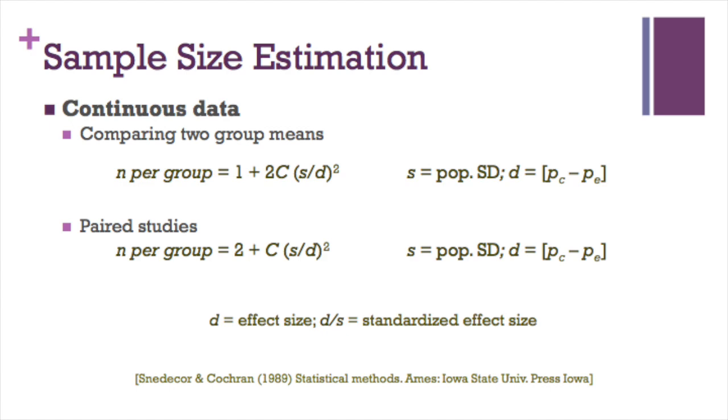For continuous data to compare two group means, either independent samples or paired sample, we need to know what is the standard deviation of the data, s, and the effect size, d. Both data can be obtained from previous studies or expert consensus.